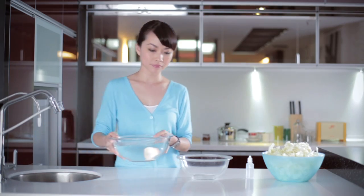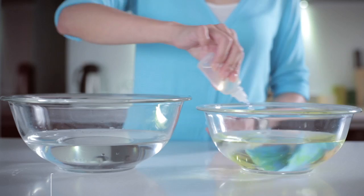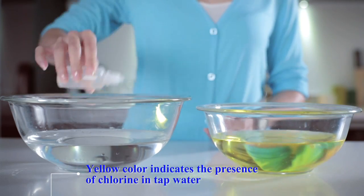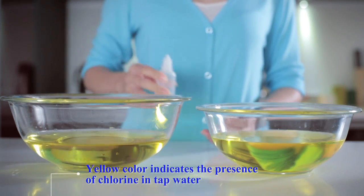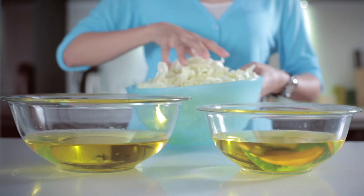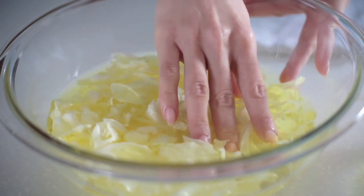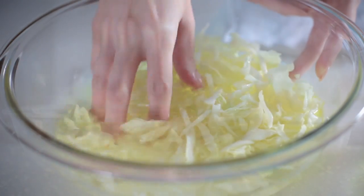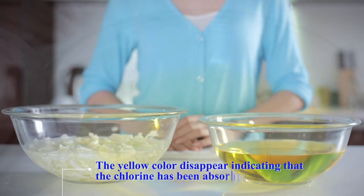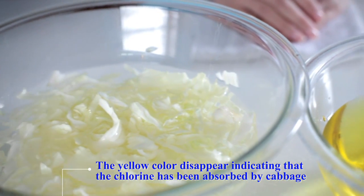Let's see how chlorine from the tap water gets into our food. Just add in few drops of chlorine tester reagent into the tap water. The water will turn yellow, indicating the presence of chlorine. Now, let's put in some cabbage. Did you see that? The yellowish water turns clear, indicating that the chlorine is no longer present. Where does the chlorine go? It has been absorbed by the cabbage.